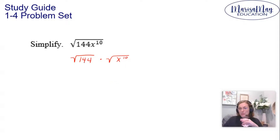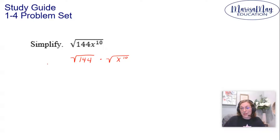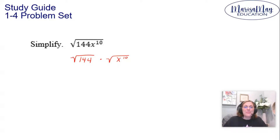So the square root of 144 — pretty simple. You can type that into your calculator. If you need a free online calculator, I'm going to link it in the description below so you can easily type it in. Square root of 144, put that in your calculator, you're going to get 12.